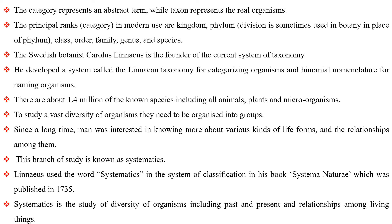There are about 1.4 million known species, including all plants, animals, and microorganisms. To study this vast diversity of organisms, they need to be organized into groups. Since a long time, man has been interested in knowing more about various kinds of life forms and the relationships among them. This branch of study is known as systematics. Linnaeus used the word systematics in his system of classification in his book Systema Naturae, published in 1735. Systematics is a study of the diversity of organisms, including past and present, and the relationships among living things.